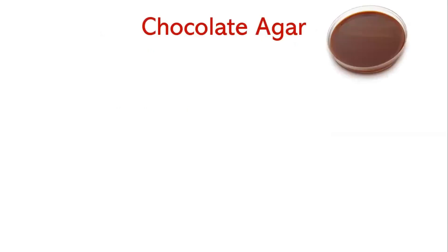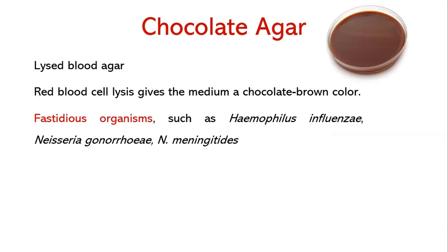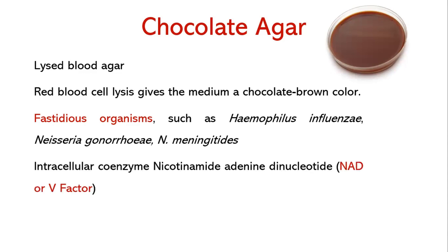Chocolate agar is essentially lysed blood agar. The name derives from the fact that red blood cell lysis gives the medium a chocolate brown color. It is used for the isolation of fastidious organisms such as Haemophilus influenzae, Neisseria gonorrhoeae, and Neisseria meningitidis, because they require special factors. Lysis of RBCs during heating releases the intracellular coenzyme nicotinamide adenine dinucleotide (Factor V) into the agar for use by fastidious bacteria. Hemin (Factor X) is available from both non-hemolyzed and hemolyzed blood cells.